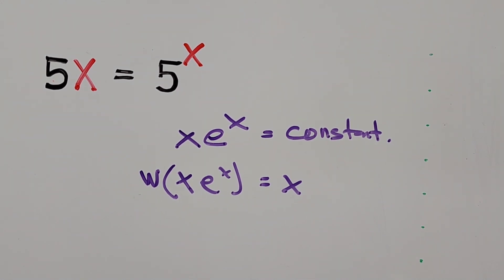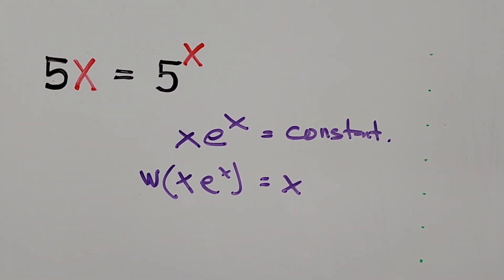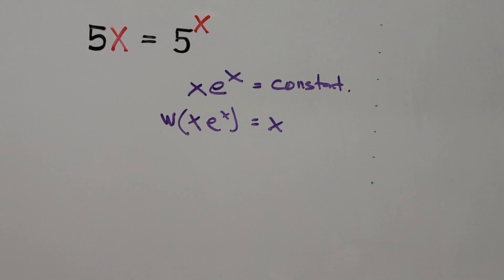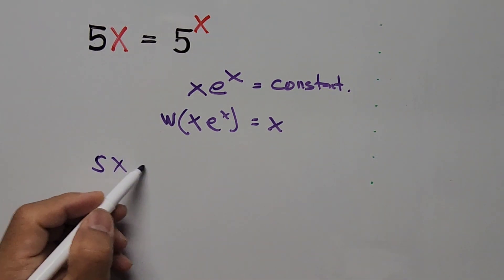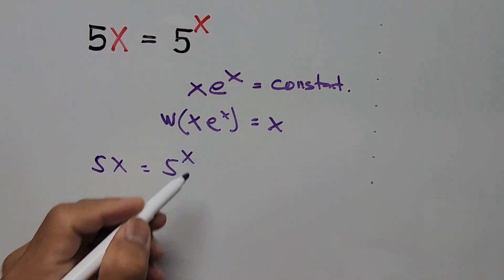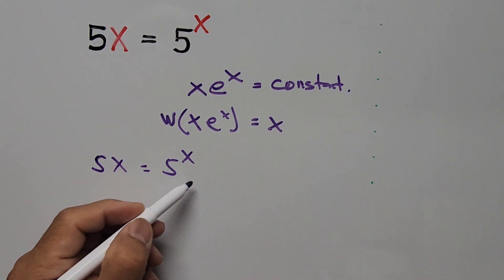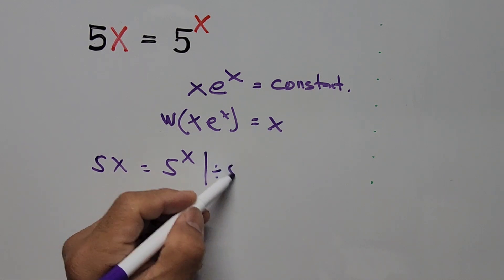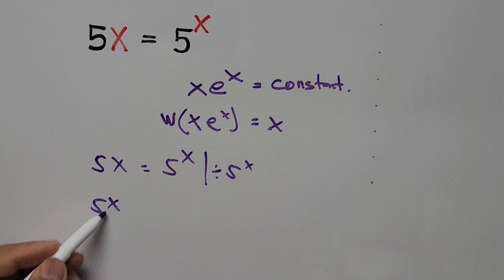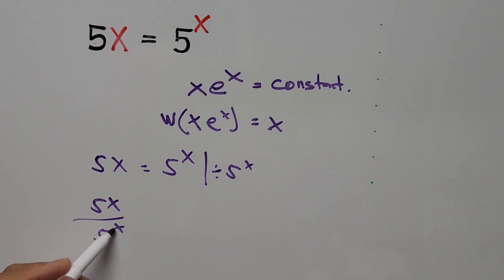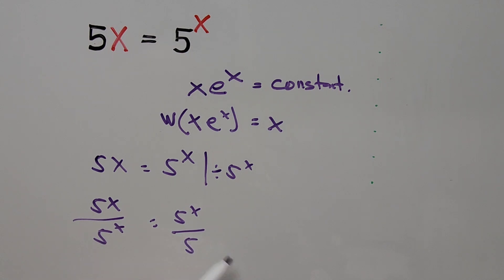So how are we going to convert the equation 5x equals 5 to the power of x into this form? Let's start by writing the equation again: 5x equals 5 to the power of x. Here we divide the equation by 5 to the power of x. So we have 5x divided by 5 to the power of x equals 5 to the power of x divided by 5 to the power of x.